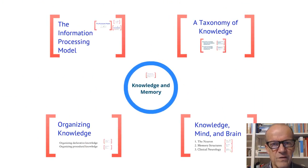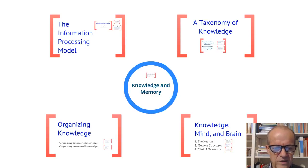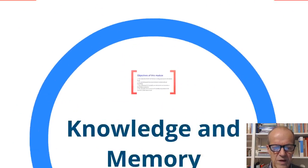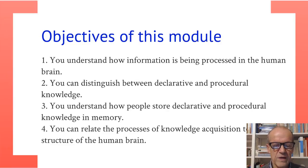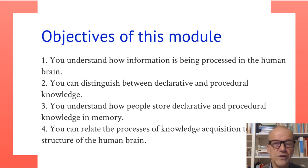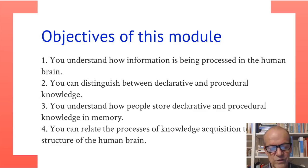We have now ended the third module on knowledge and memory. We have discussed the human information processing system, hopefully now understand how information is processed, can distinguish between declarative and procedural knowledge, understand how people store declarative and procedural knowledge, and can relate the processes of knowledge acquisition to the structure of the human brain.